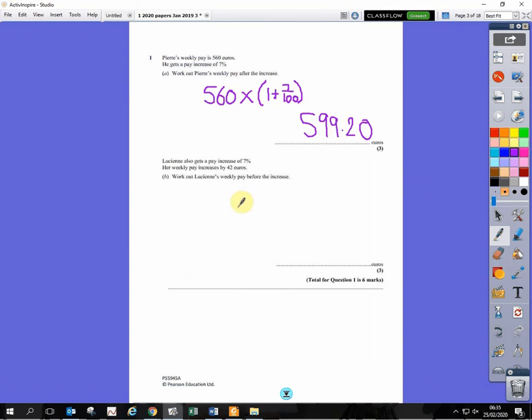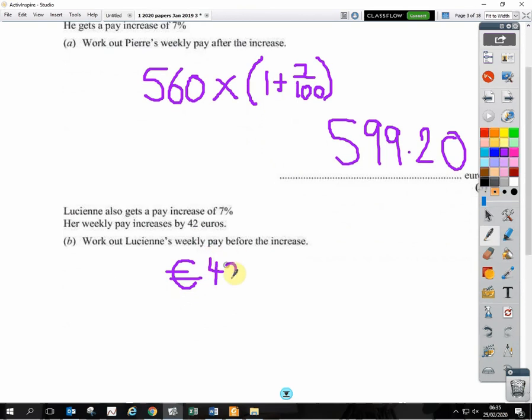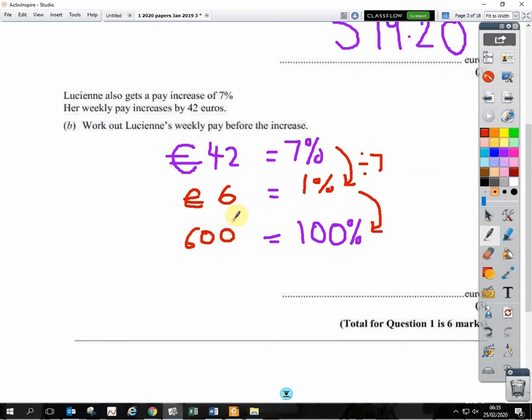The next question says he gets a pay increase of 7%. The pay increase is by 42 euros, which means 7% is 42 euros. So 42 euros is worth 7%. What we're trying to do is work out what his salary was, or weekly pay was, before the increase. That's 100%. We can just go from 7% to 1%, and then from 1% to 100%. If we divide this by 7, that ends up as 6 euros. If you times this by 100, you end up with 600 euros.